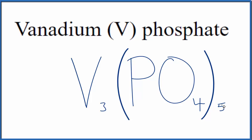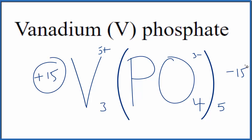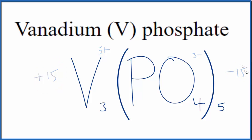To check our work: each vanadium is 5 plus, and each phosphate is 3 minus. 5 times 3 minus equals minus 15, and 3 times 5 plus equals plus 15. These charges balance out, confirming this is the correct formula for vanadium 5-phosphate.